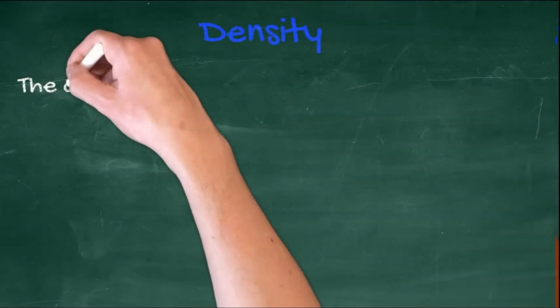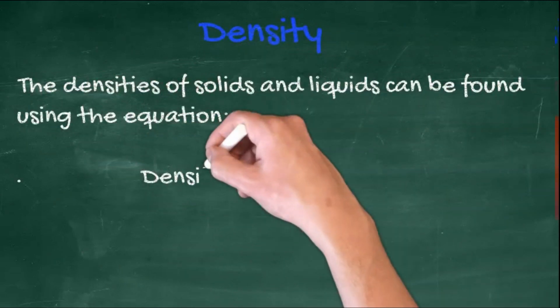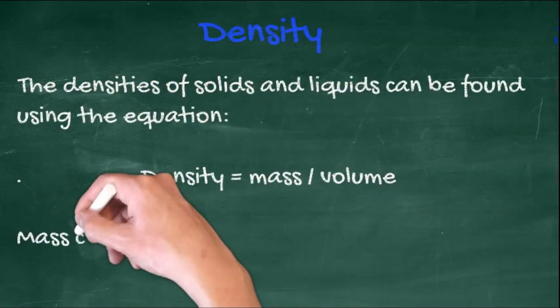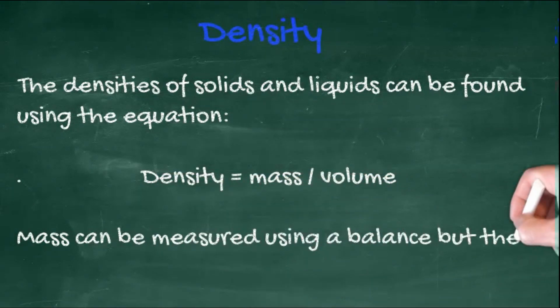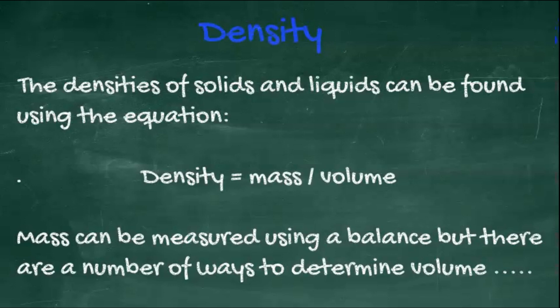We've just mentioned density, and density can be calculated from the formula: density equals mass divided by volume. Mass can be measured using a balance, but there are a number of ways to determine volume.